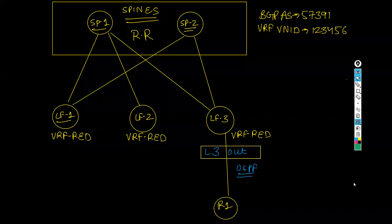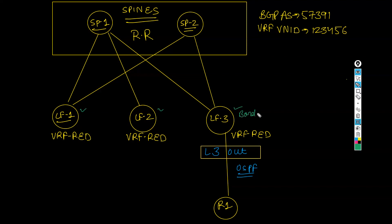In this section we will discuss how MPBGP works in the Cisco ACI fabric. In the diagram we have spine switches on the top and three leaf switches: Leaf 1, Leaf 2, and Leaf 3. Leaf 3 is our border leaf, which is connected to the outside world and is connected to R1, which is outside the ACI fabric.